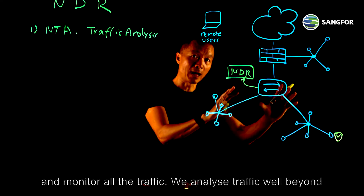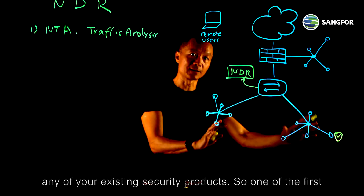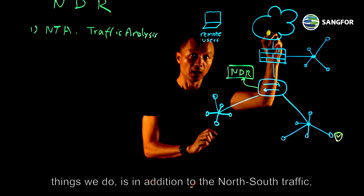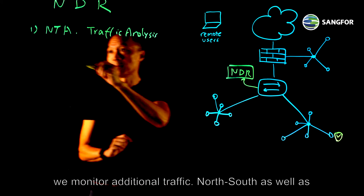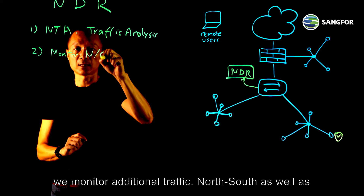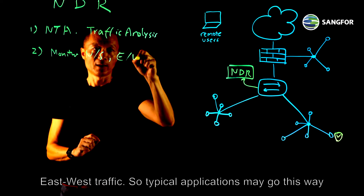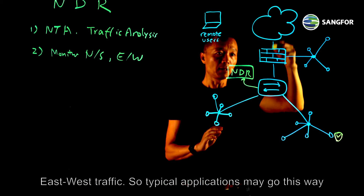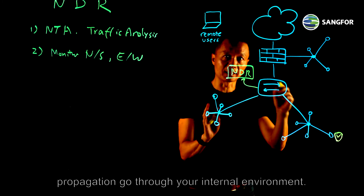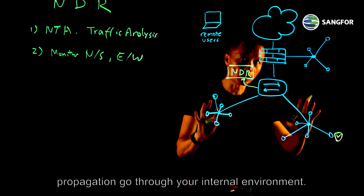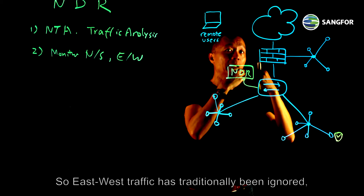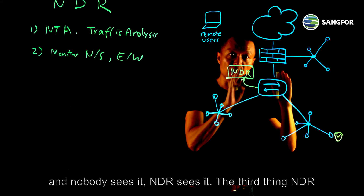We analyze traffic well beyond any of your existing security products. In addition to north-south traffic, we monitor additional traffic — north-south as well as east-west traffic. A typical application may go north-south, but a lot of actual internal traffic as well as malware propagation go through your internal environment. East-west traffic had traditionally been ignored, and nobody sees that. NDR sees that.